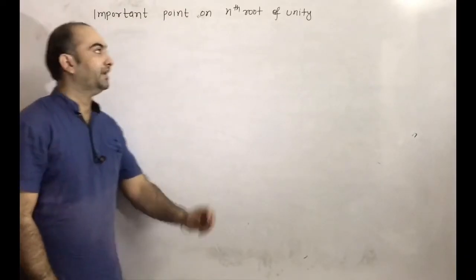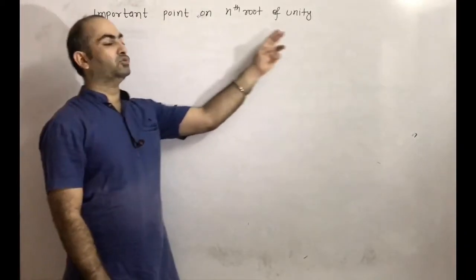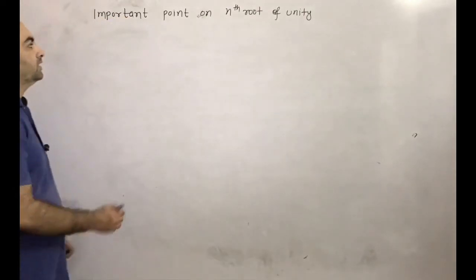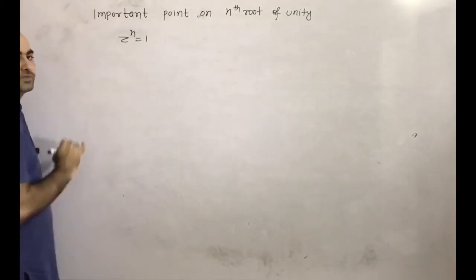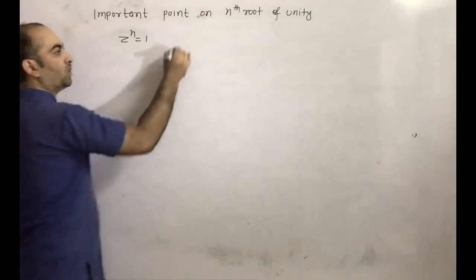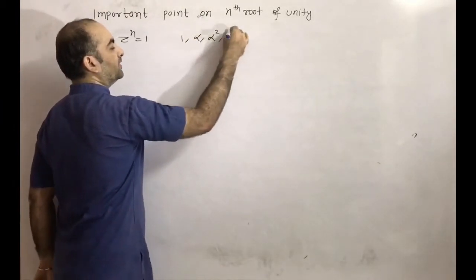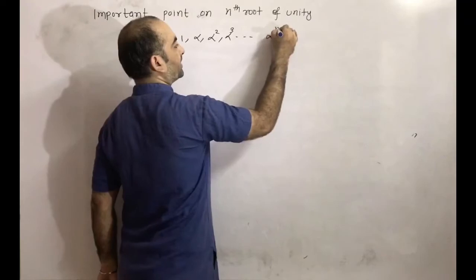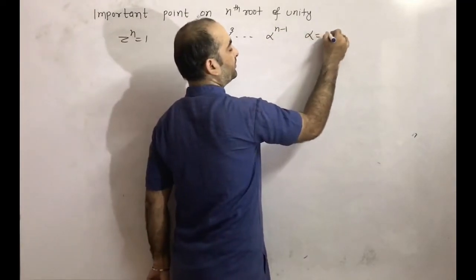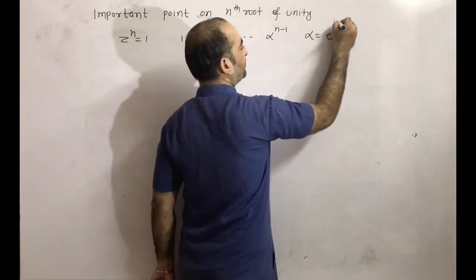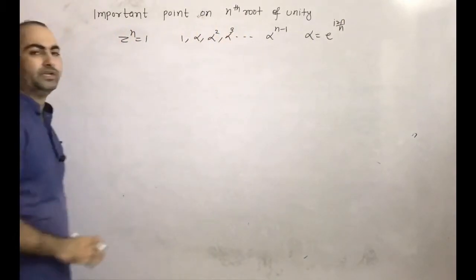Next we are discussing important points on nth root of unity. We have z^n = 1, and the roots are 1, alpha, alpha squared, alpha cubed, and so on up to alpha^(n-1), where alpha = e^(i·2π/n). So these are the n roots.